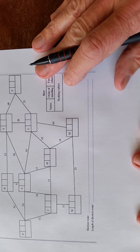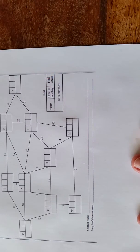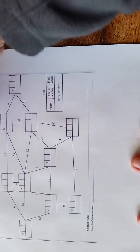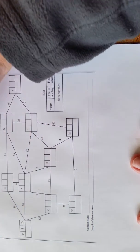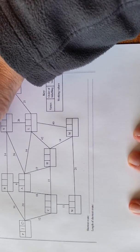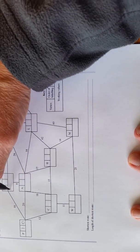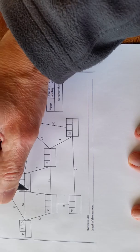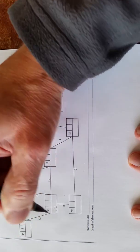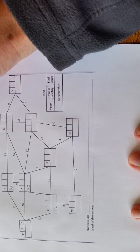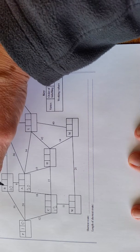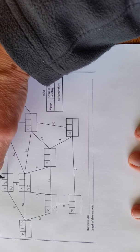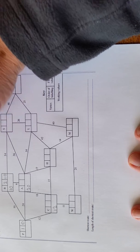We'll start at this one here. The first one we choose, it says start at P, so that's the first one we choose and it's zero miles. Now we'll look at all the arcs from this. We've got 10, this is a temporary value, 20, another temporary value, and 12, temporary value. Now we'll find the shortest one out of all of these. B here, 10 is the shortest, so that becomes the second one chosen and it's a permanent value of 10.